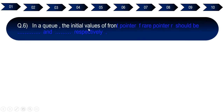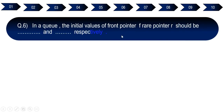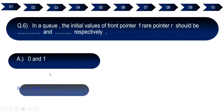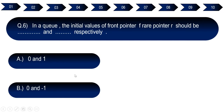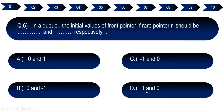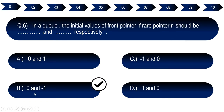Question number six: In a queue, the initial values of front pointer F and rear pointer R should be dash and dash respectively. Option A: 0 and 1. Option B: 0 and -1. Option C: -1 and 0. Option D: 1 and 0. The right answers for question number six are option B (0 and -1) and option D (1 and 0).